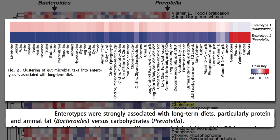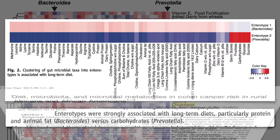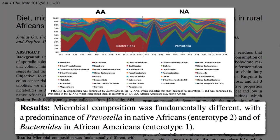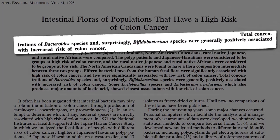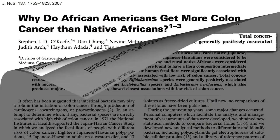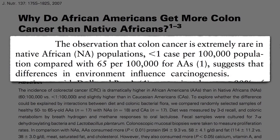Animal fat, cholesterol, and animal protein are associated with the Bacteroides enterotype, while plant components like carbohydrates are associated with Prevotella. Bacteroides species are generally associated with increased risk of colon cancer — our second leading cause of cancer death — yet almost unheard of among native Africans. Differences in gut flora may help explain why Americans appear to have more than 50 times the rate of colon cancer.